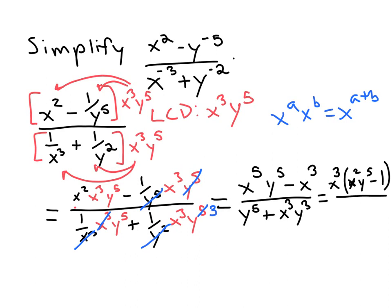We can also factor out the common factor of y in the denominator. Always factor out the lower exponent, so y cubed, leaving y squared plus x cubed.